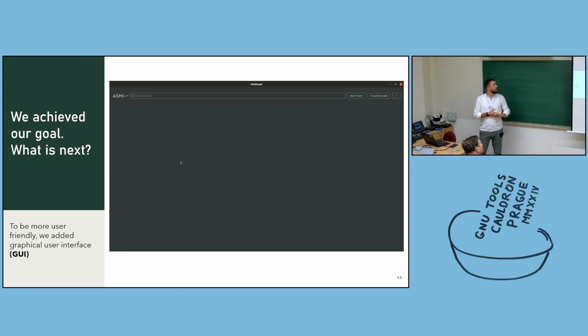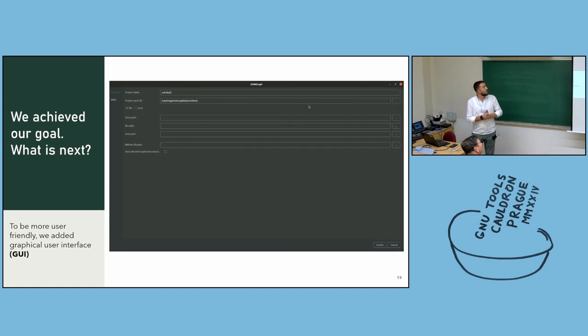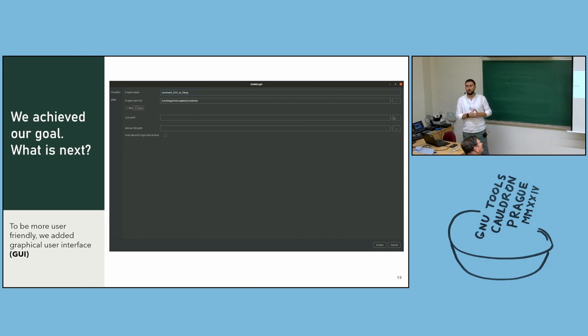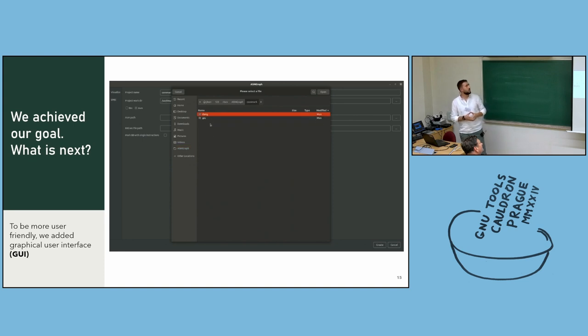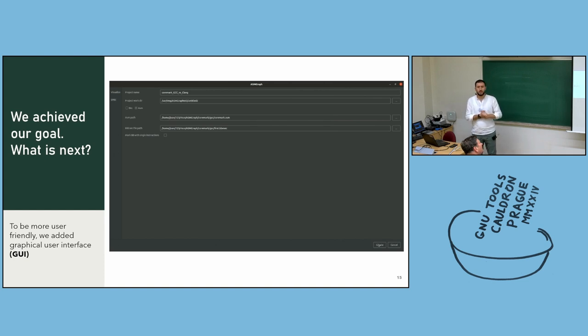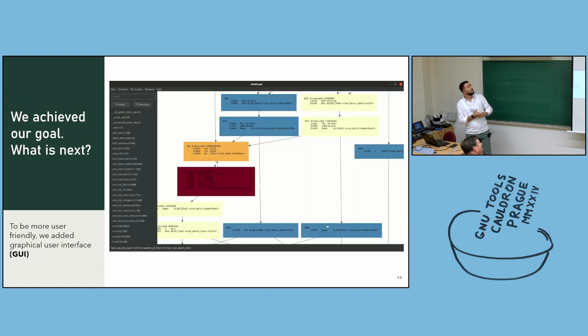To be more user-friendly, we add graphical interface. Let's see how it works. At first point, you should create a new project by clicking and typing the name. Let's call it Cormark GCC versus CLANG. Then we need to select assembly files and coverage basic block files for the GCC. I prepared that one. Select them and start to generate graphs. It will take a while. Now our project is loaded.